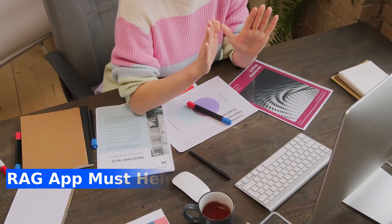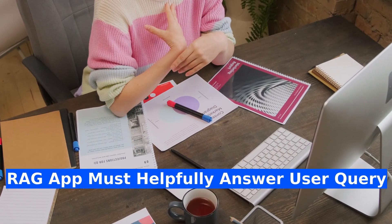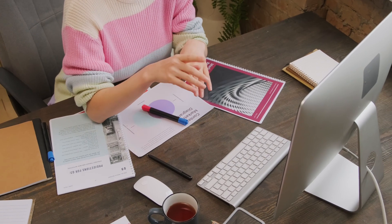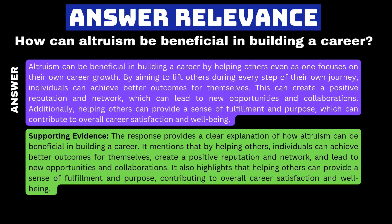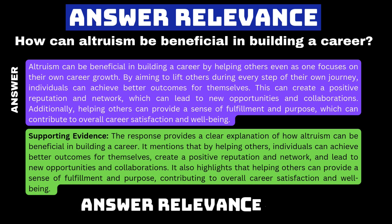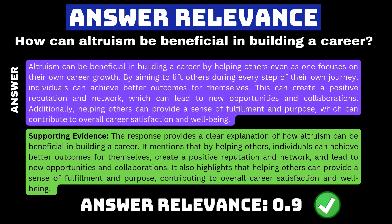Finally, the response generated by the RAG app must helpfully answer the user query. As part of answer relevance, we evaluate the relevance of the final response to the user query. We assign a score between 0 and 1 to the response based on how accurately it answers the user's query — a high score means the response is doing a good job of answering the query.